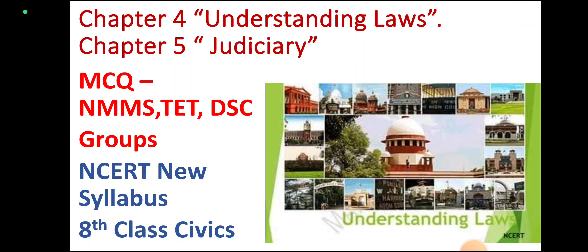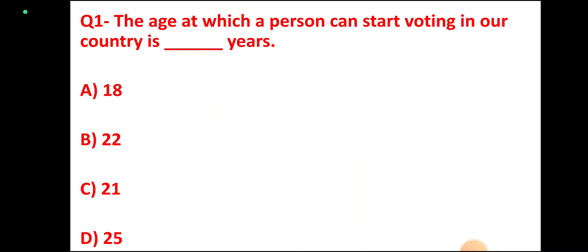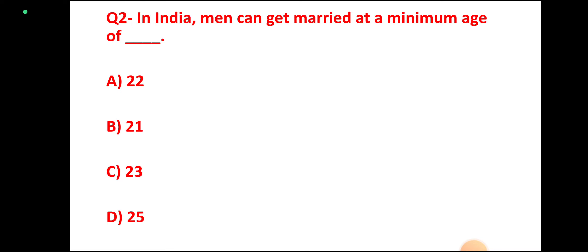NCERT 8th class, Chapter 4, Question 1: The age at which a person can start voting in our country is — 18 years, 22 years, 21 years, or 25 years? Correct answer: 18 years.